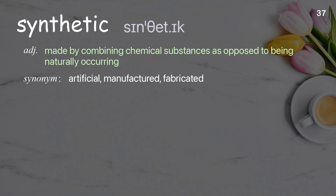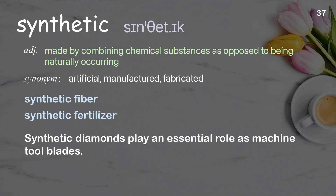Synthetic: made by combining chemical substances, as opposed to being naturally occurring. Examples: synthetic fiber, synthetic fertilizer. Synthetic diamonds play an essential role as machine tool blades.